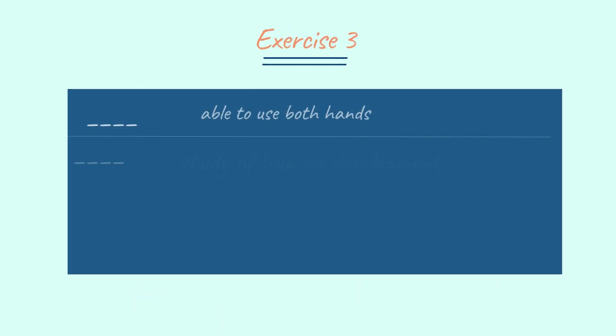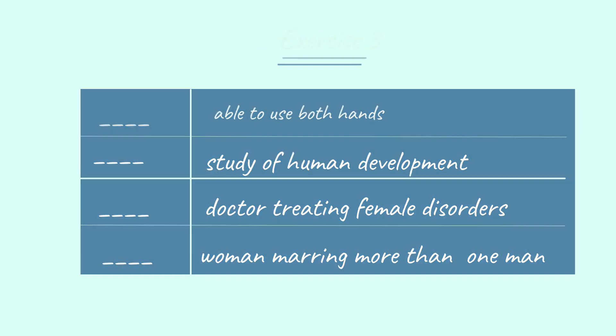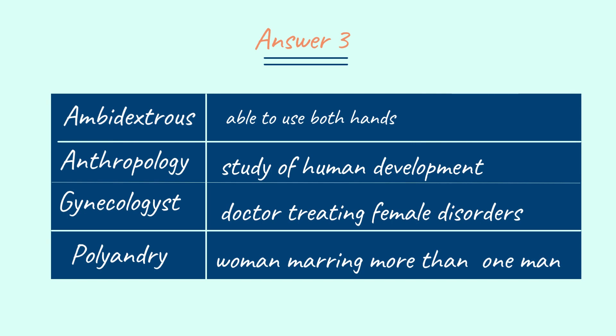Now let's look into the final exercise. You need to find the personality based on the details given on the right side of the table. Pause the video and solve. The answers are: 1. Ambidextrous — able to use both hands. 2. Anthropology — study of human development. 3. Gynecologist — doctor treating female disorders. 4. Gynecologist — doctor treating female disorders. 5. Polyandry — woman marrying more than one man.